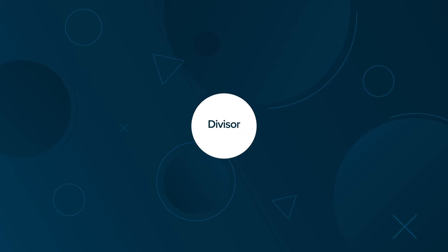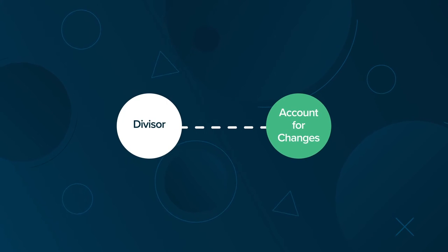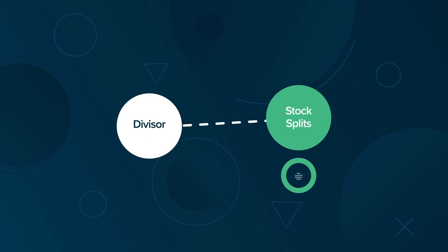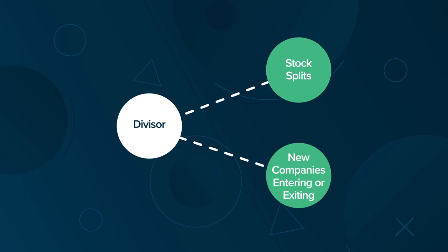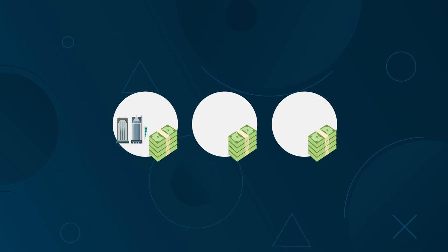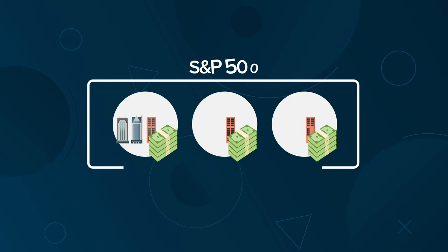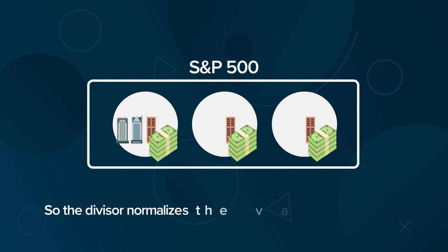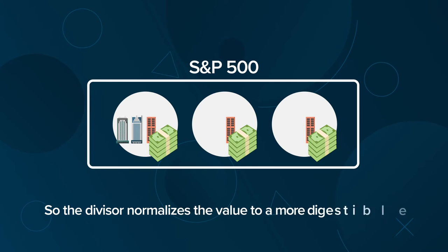The divisor is used to account for changes such as stock splits and new companies entering or exiting the index. Also, the sum of market capitalization of companies listed in the S&P 500 amounts to trillions of dollars, so the divisor normalizes the value to a more digestible figure.